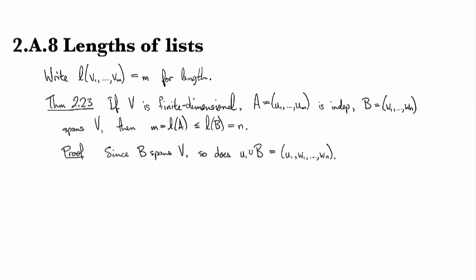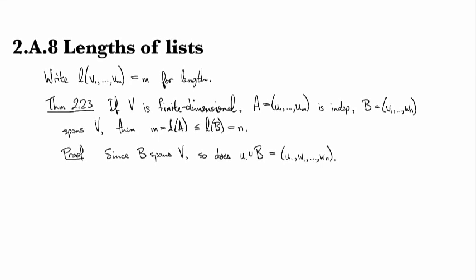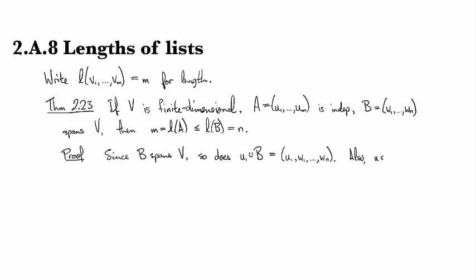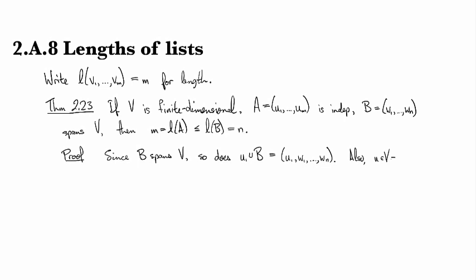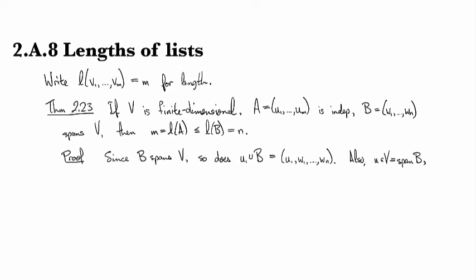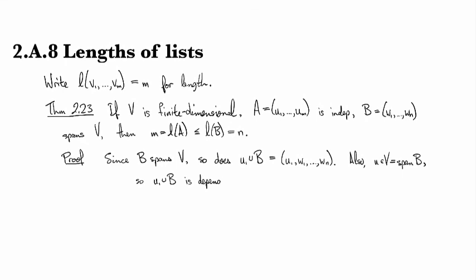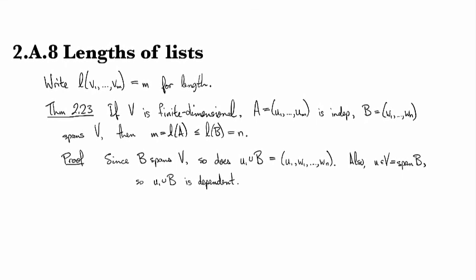So we know that when we had joined U1 to the list, it still remains a spanning list. But we also know now that since U is some element of V, which is the span of B, we know that the resulting set is dependent.